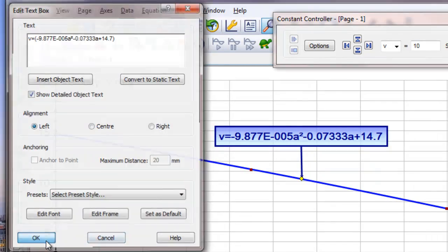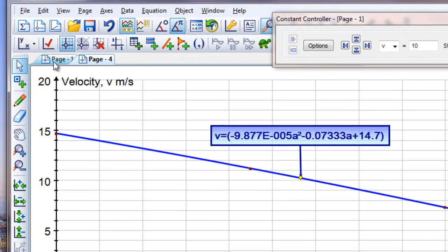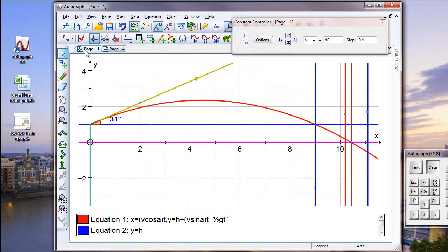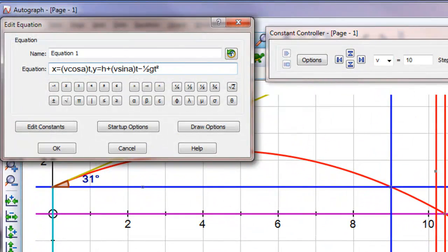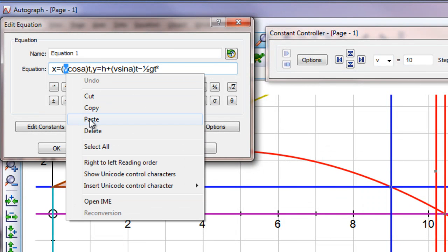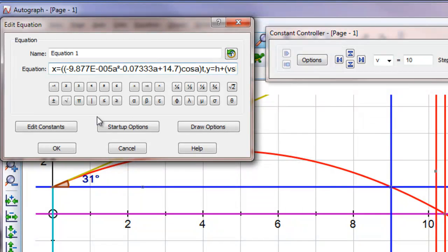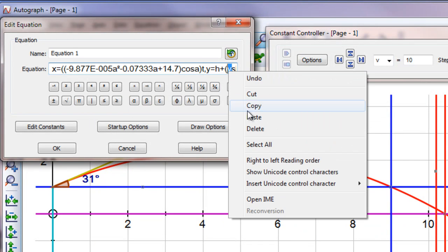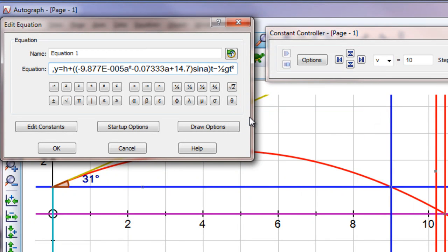So if we now go back to the other page, we can have a look at the original equation, the parametric equation, and substitute for v this expression for a. So that the velocity, which is now a function of the angle, can be substituted there. And so we get a very long parametric equation now that is dependent only on angle, not on velocity.